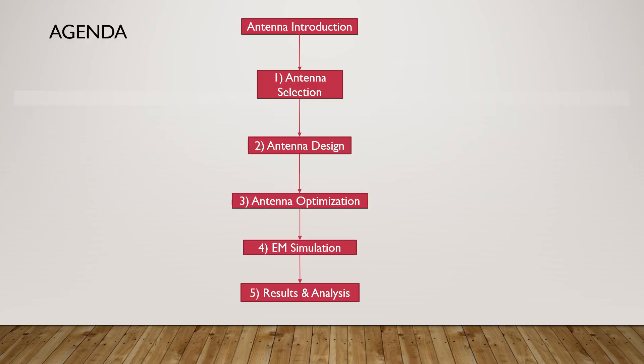Table 4.1 shows the antenna design steps. We will start by giving an introduction to the antenna. The first step of designing an antenna is antenna selection. The next step is to design the selected antenna. The third step is to optimize the antenna, followed by antenna EM simulation. Finally, the results of the antenna will be analyzed. In part 15 of the practical RF design tutorial, the antenna introduction, antenna selection, and antenna design section will be covered.